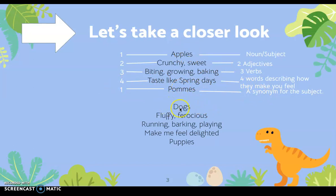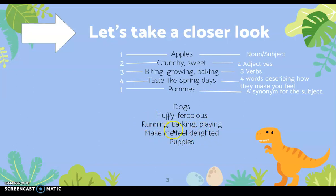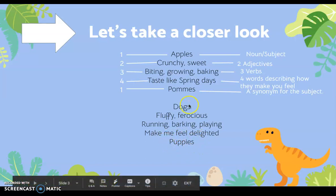Here's another example. For the first line I used one word and it's a noun: dogs. For the second line, it's two words and they're adjectives: fluffy, ferocious. For the third line, it's three words and they are verbs or action words: running, barking, playing. The fourth line is four words that tell you how it made the reader feel: 'make me feel delighted.' And the last word is a synonym for dogs — so dogs and puppies mean the same thing.